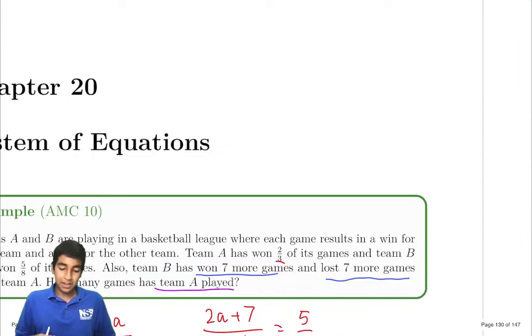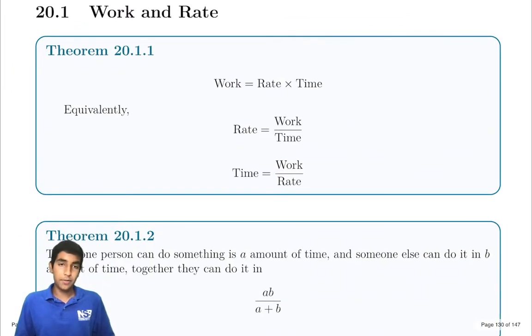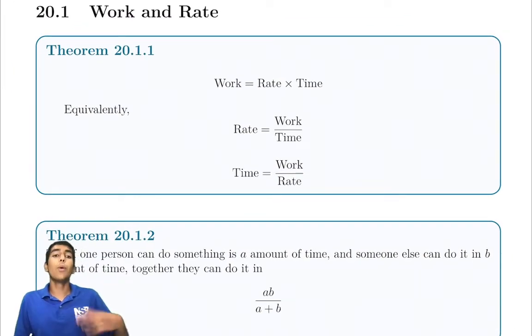Now this is a simple example, but now we're going to move on to some harder topics and problems. So work is just rate times time, rate is work divided by time, and time is work divided by rate.